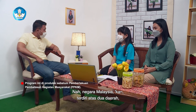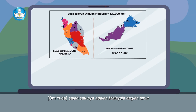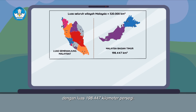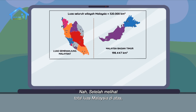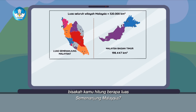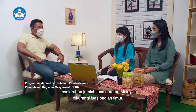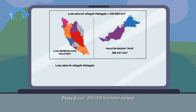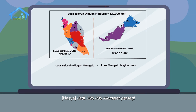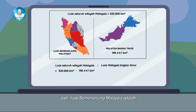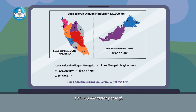Negara Malaysia terdiri atas 2 daerah. Salah satunya adalah Malaysia bagian timur dengan luas 198.447 km persegi. Setelah melihat total luas Malaysia, bisakah kamu hitung berapa luas semenanjung Malaysia? Berarti ngitungnya keseluruhan luas daratan Malaysia dikurangi luas bagian timur: 320.000 km persegi dikurangi 198.447 km persegi. Jadi, luas semenanjung Malaysia adalah 121.553 km persegi.